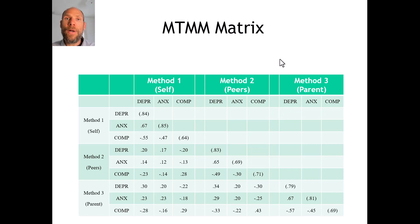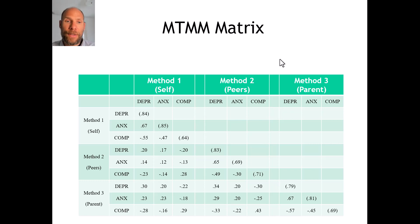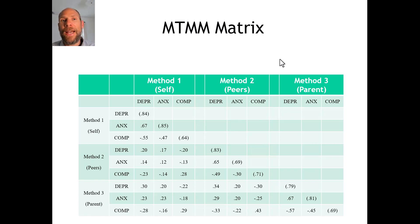Peer reports were also collected, so other children nominated children in their class for anxiety, depression, and competence, providing an overall score for each child based on peer nominations. There was also a parent report where parents were asked to rate their children on those three constructs. Each method or rater type was used for each construct, giving us a fully cross design where we can look at all those correlations and what they mean for convergent and discriminant validity.